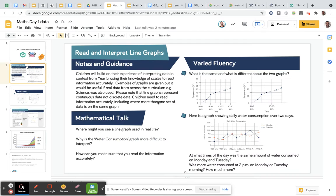Please note that the line graphs represented continuous data and not discrete data. We'll go into that at some point as well. And children need to read information accurately, including where more than one set of data is on the same graph. So here you can see there's one set of data on this graph and this graph, but here you can see there's two sets of data.